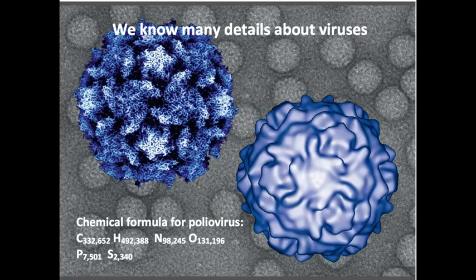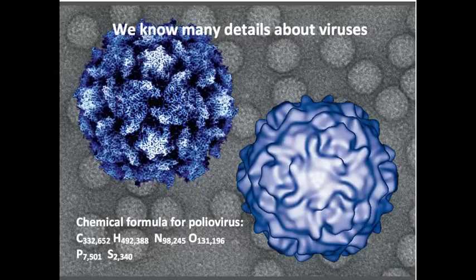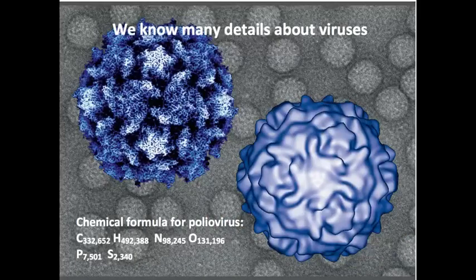Today we know an incredible amount about viruses. We can solve their structures at atomic resolution. Here on the left is the structure of poliovirus at 1.7 angstroms resolution — meaning we can see where every atom is in three dimensions. We can make images by taking the X, Y, Z coordinates of each atom and having a computer display them. At about 10 angstroms resolution you see the overall shape of the particle but not individual polypeptide chains. And because we know the sequence of the genome of many viruses, we can calculate their chemical structures — here's the chemical formula for poliovirus, probably the most complex chemical you've set your eyes on so far.